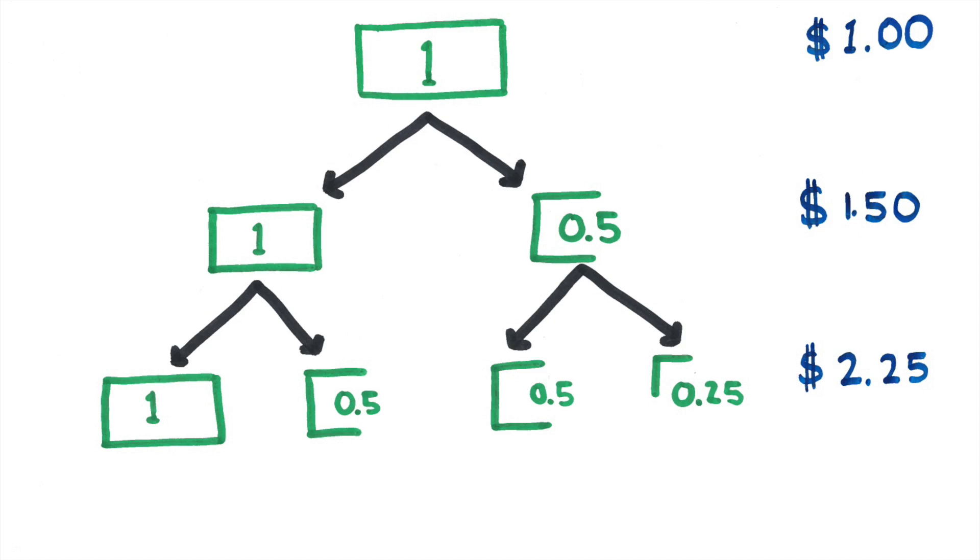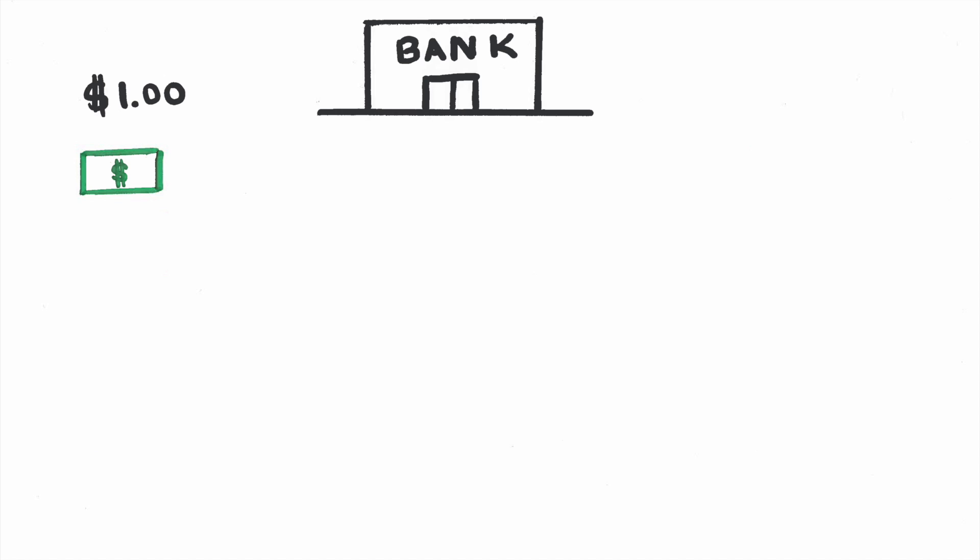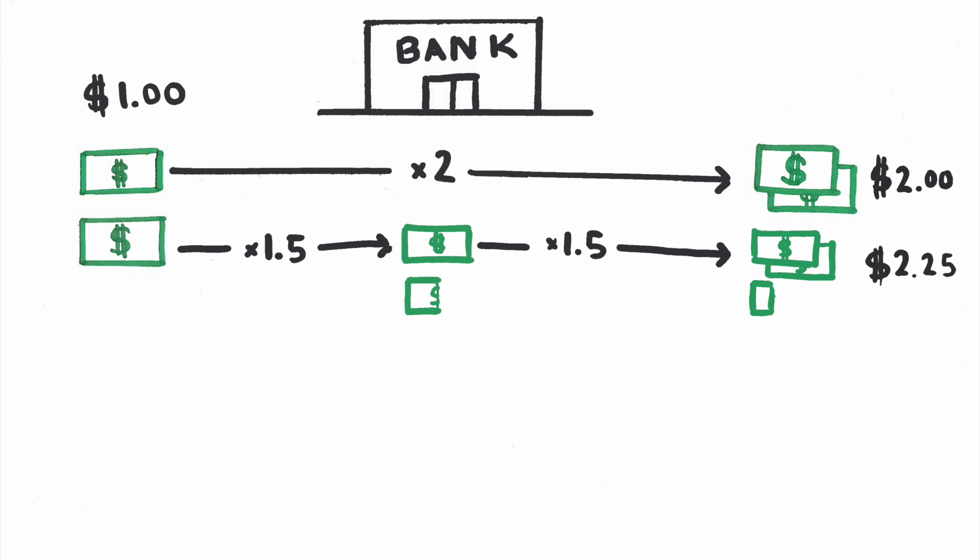So if you stick $1 into a bank account with 100% interest rate compounded annually, you'll get $2 at the end of a year. If it's compounded semi-annually, you'll end up with $2.25. Quarterly, and you'll end up with $2.44.